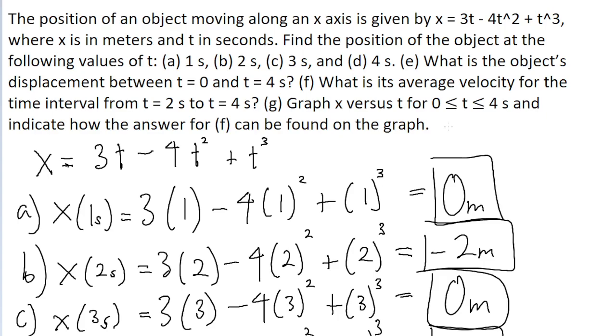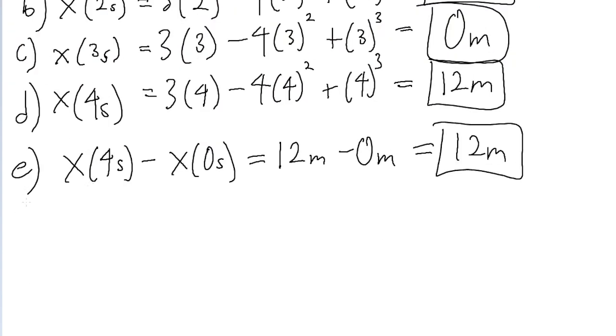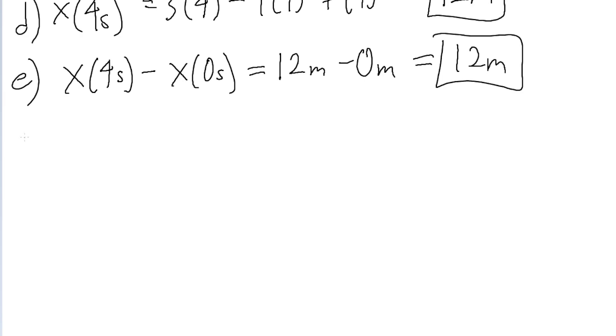Part F of the problem asks for the average velocity of the object from 2 seconds to 4 seconds. Average velocity refers to a change in displacement over time. As a formula, average velocity can be written as the displacement or the change in x for some interval divided by that interval.